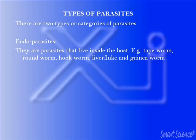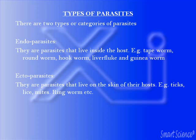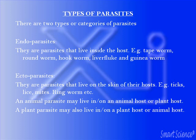The second category is ectoparasites — those parasites that live on the skin of their hosts. Examples are the tick, the lice, mites, and the ringworm. An animal parasite may live in or on either an animal host or a plant host. In the same way, a plant parasite may also live in or on a plant host or an animal host.